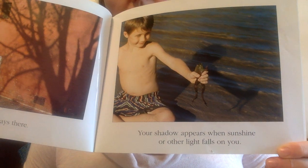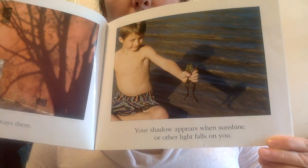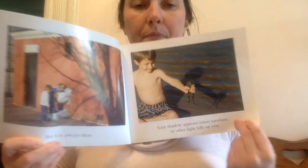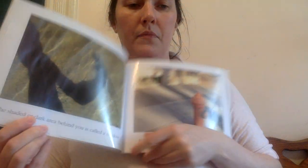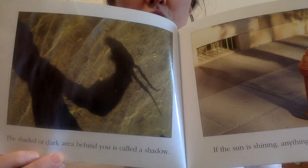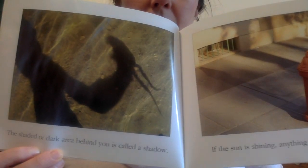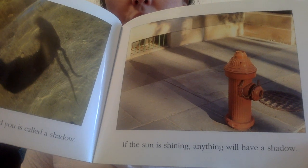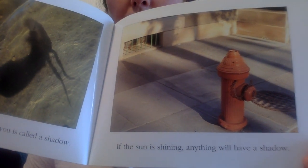But it is always there. Your shadow appears when sunshine or other light falls on you. The shaded or dark area behind you is called a shadow. If the sun is shining, anything will have a shadow.